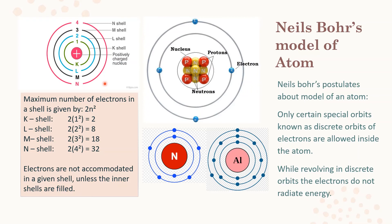Similarly, neon has atomic number 10 — 2 electrons in K and 8 in L shell, filling the outermost shell, making neon a stable element. All Group 18 elements in the periodic table are stable. For nitrogen (atomic number 7), the electronic configuration is 2,5 — K shell holds 2 and L shell holds 5 electrons.